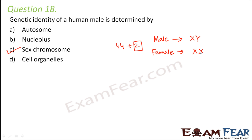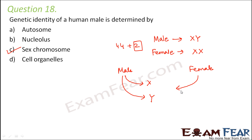During fertilization, both male and female contribute half of their total chromosomes — 22 autosomes plus one sex chromosome each. A male can contribute either the X chromosome or the Y chromosome. The female has only X chromosomes, so she always contributes X. If the male contributes X, the child will be a girl; if the male contributes Y, the child will be a boy. So the genetic identity of a human male is determined by the sex chromosome.